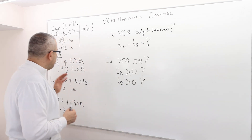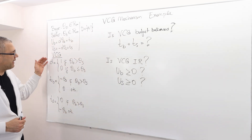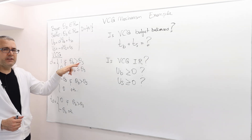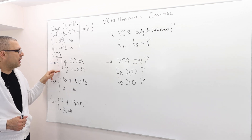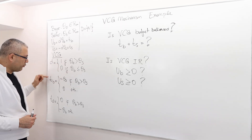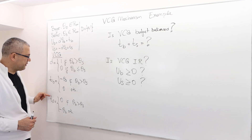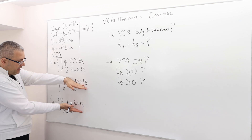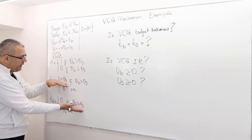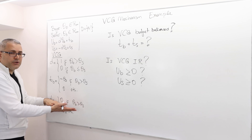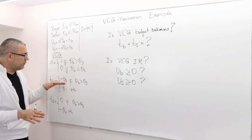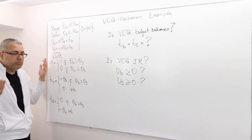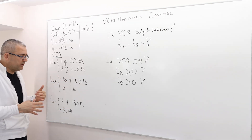So we already calculated the VCG mechanism decision rule, which says whenever the buyer's valuation is greater than the seller's valuation, trade should occur; otherwise no trade. We also found the transfer functions — kind of the price. It says if there's a transfer, the buyer should pay theta_S amount of money and the seller should receive nothing. So when the buyer makes this payment, who receives this money? No one. That's the awkward side of it.